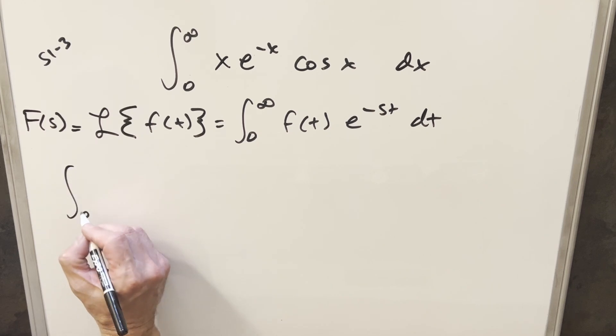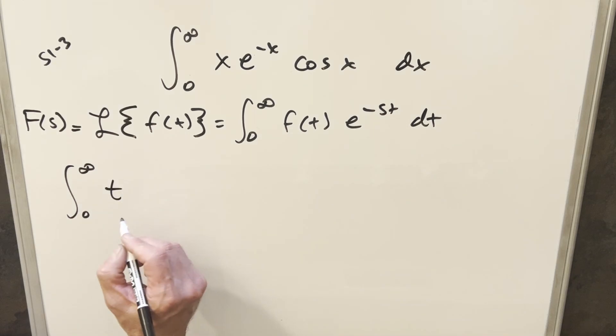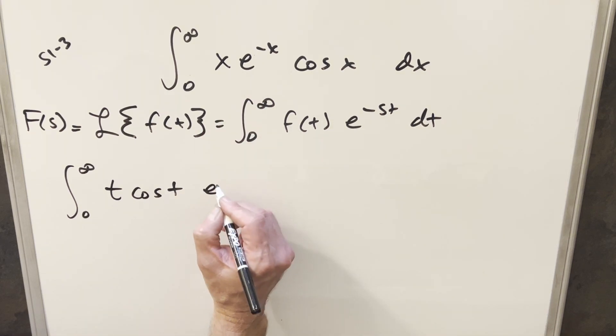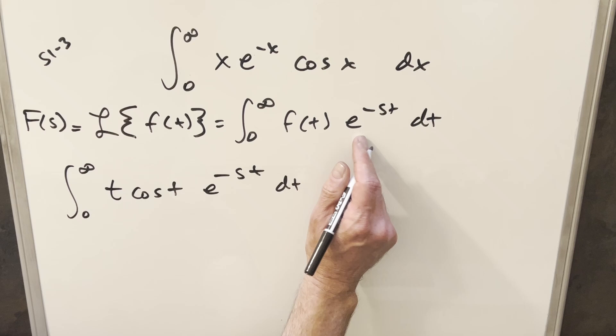So let's just rewrite this, going from zero to infinity. What I'm going to do is change the variable. I just like to use t when I'm doing a Laplace transform. You don't really need to, but let's do this. So this is x I'm going to write as t, cosine t, and then for this we'll have e minus, I'm going to create st right here just to match this.